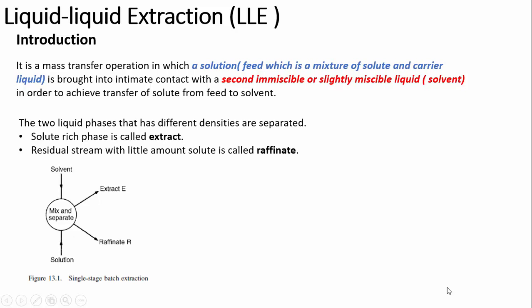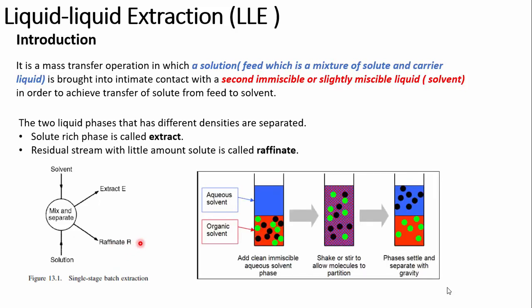This is a single-stage extraction, where the feed and the solvent are contacted in one stage. The solution containing solute plus carrier liquid and the solvent are mixed in a mixer, then separation occurs based on density difference. After separation, you have an extract with a high amount of solute and a raffinate containing only a small or zero amount of solute.